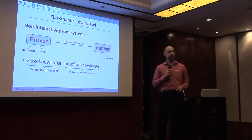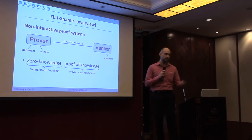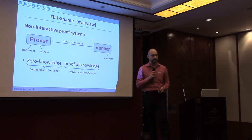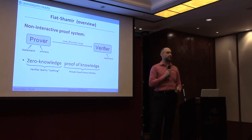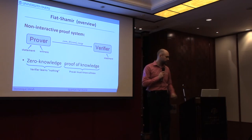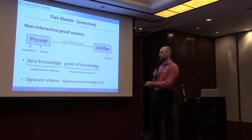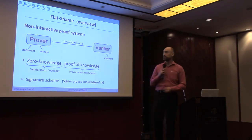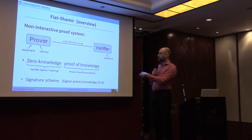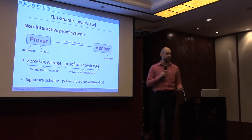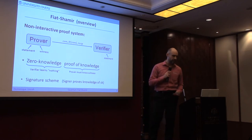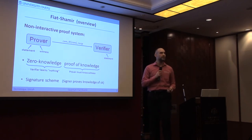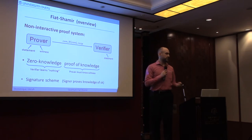One important application of Fiat-Shamir — probably what most people have been thinking about in the context of post-quantum cryptography — is that you can get an efficient signature scheme out of Fiat-Shamir. The prover doesn't prove just an arbitrary statement, but proves that it knows the secret key. And since only the prover can do that, it is a signature.